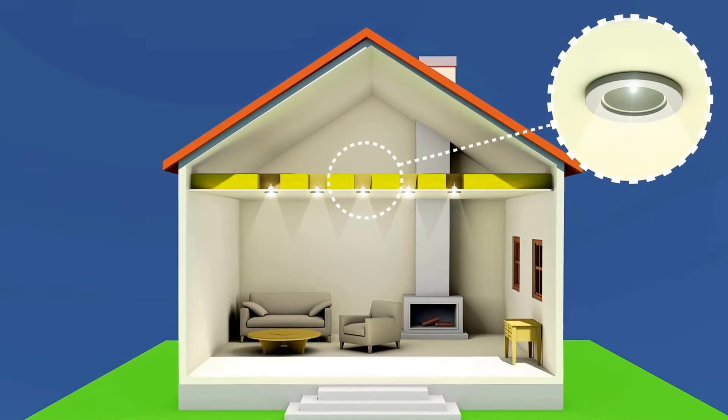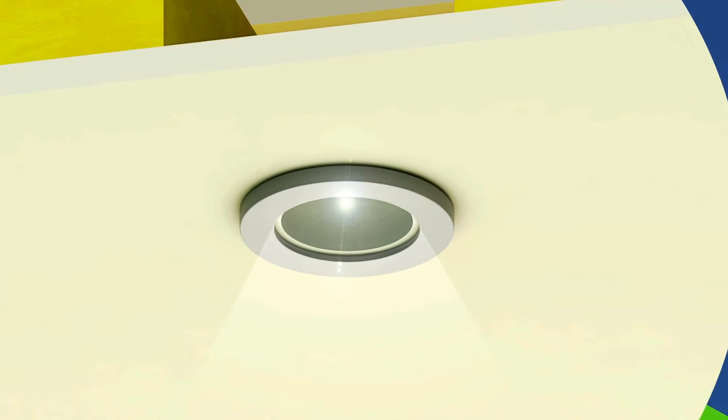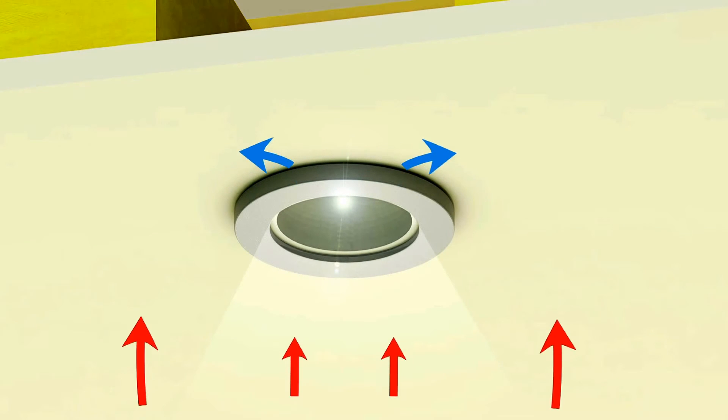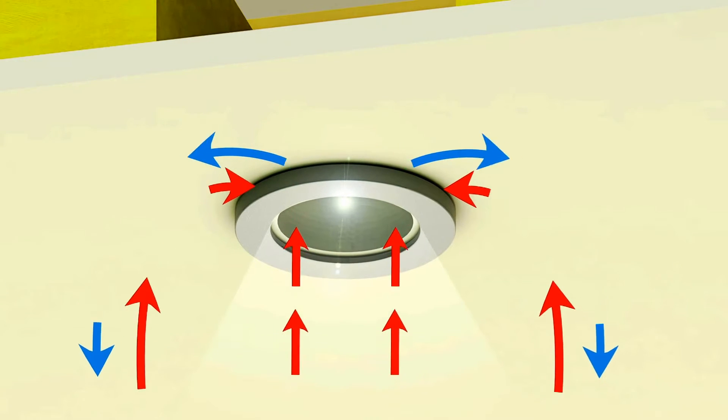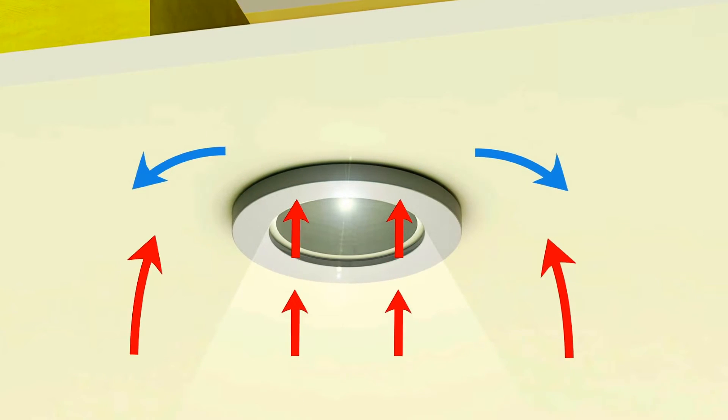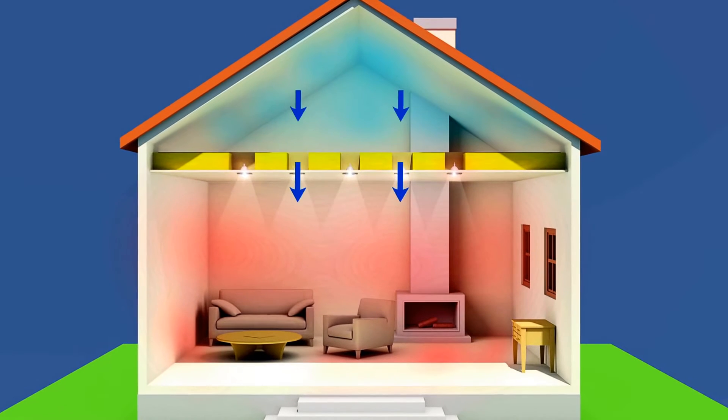Downlights in attic ceilings are a very weak point in the fight against heat loss. Gaps between the light fitting and plasterboard allow warm air to escape and cold air to enter the living room.